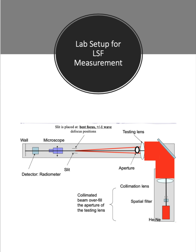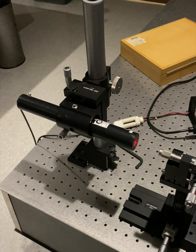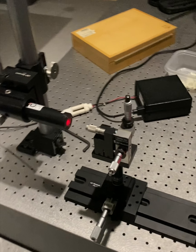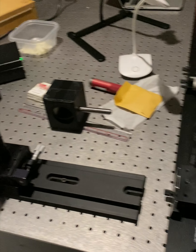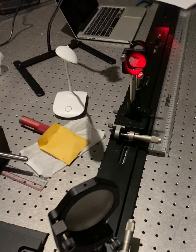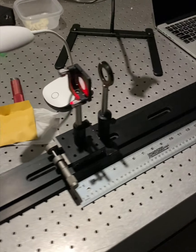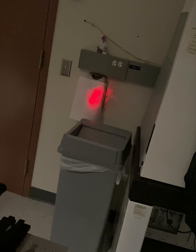In this lab, we look to characterize MTF by measuring the line spread function of a diffraction-limited system. We stopped down the aperture to make it a diffraction-limited system and then measured the line spread function by using a slit that's scanned across the Airy disk. The setup was similar to previous labs with a Heaney laser and a beam expander and spatial filter that cleaned the beam, as well as another turn mirror followed by the test lens aperture stop and then either a microscope or a slit and detector.